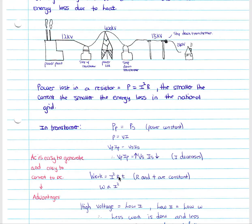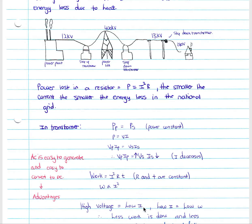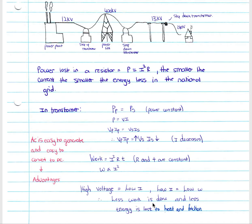We know that work is equal to I²Rt, where R and t are constant because our resistance and time will not change. Therefore, work done is directly proportional to I². At a higher voltage we have a lower I — lower current — and lower current equals lower work. So less work is done and less energy is lost to heat and friction.